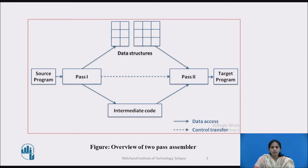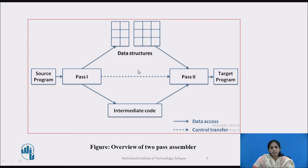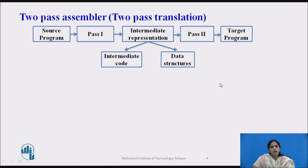First, we see the diagram of the overview of the two-pass assembler. The input is given as a source program to pass one. Pass one generates the intermediate representation, consisting of two components: intermediate code and data structures. That is given as input to pass two, and pass two synthesizes the target program. A pass is nothing but one complete scan of your source program. There are two types of assembler passes: two-pass assembler and one-pass assembler.